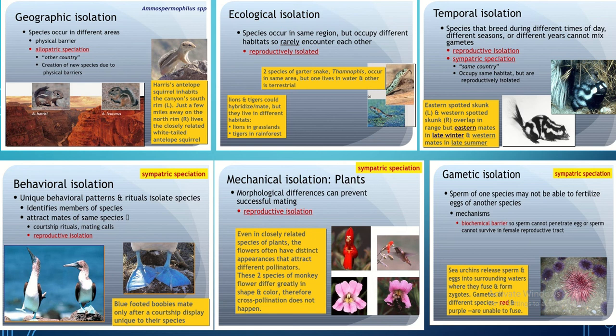Gametic isolation means sperm of one species may not be able to fertilize eggs of another species. This specifically applies to marine organisms such as sea urchins, which live in an aquatic environment and release sperm and eggs into the same water. Sperms are highly particular about eggs: red sperms fertilize only red eggs, and purple sperms fertilize only purple eggs — they do not cross-fertilize — producing red and purple sea urchins as separate species.